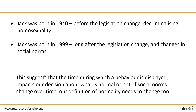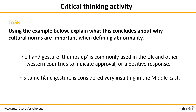We can see a stark difference between the two descriptions of Jack, caused by the year. If Jack was born in 1940, this was before the law about homosexuality changed and it would have been considered deviant. Whereas in 1999, long after the legislation had changed, the same behavior would not. This suggests that the time period in which a behavior is displayed impacts our decision about what is normal, so our definition of normality needs to change with it.